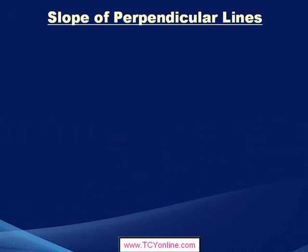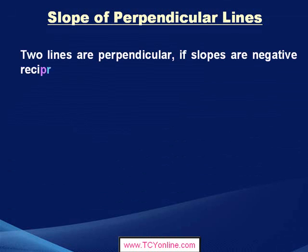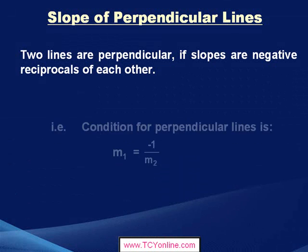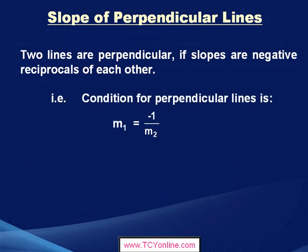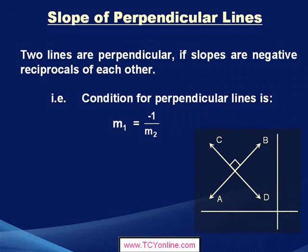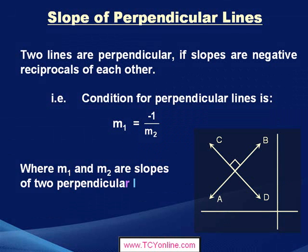Now, after parallel lines, let's move to slope of perpendicular lines. Two lines are perpendicular if their slopes are negative reciprocals of each other. That means the condition for perpendicular lines is simply M1 equals negative reciprocal of M2, where M1 and M2 are the slopes of the two perpendicular lines.